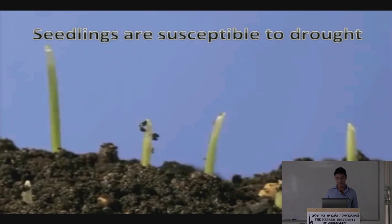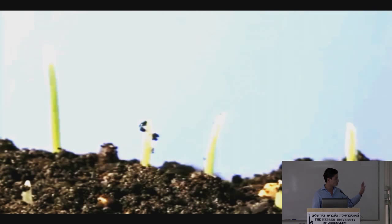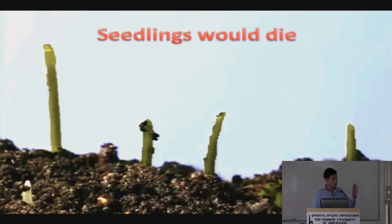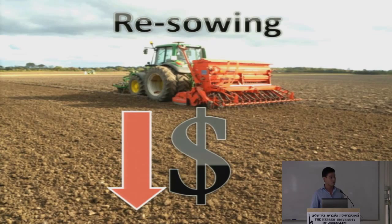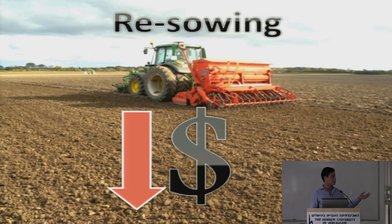Seedlings are very susceptible to drought. When plants are very small, a dry period may cause them to wilt and eventually die. This translates into significant yield reductions. In dramatic cases, farmers have to re-sow the entire field, causing not only less revenue to farmers but also an increase in food prices.